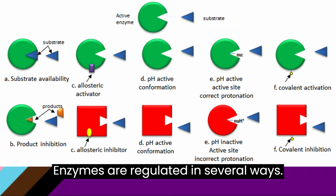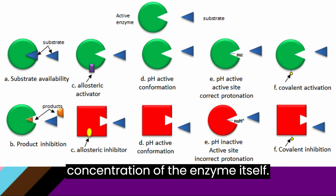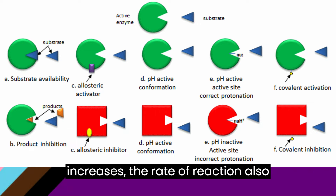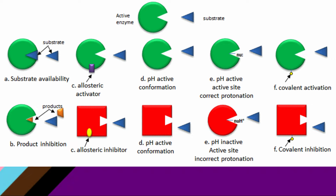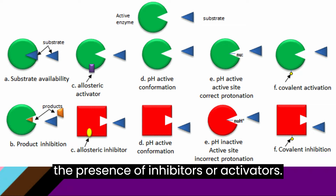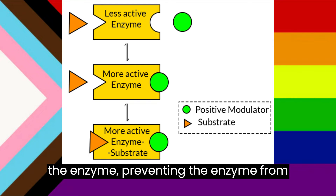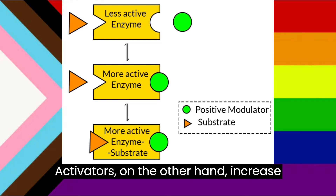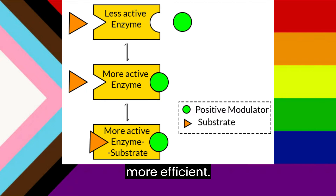Enzymes are regulated in several ways. One method of regulation is through the concentration of the enzyme itself — as the concentration of an enzyme increases, the rate of reaction also increases, up to a point of saturation. Another method of regulation is through the presence of inhibitors or activators. Inhibitors bind to the active site of the enzyme, preventing the enzyme from catalyzing a reaction. Activators, on the other hand, increase the rate of reaction by binding to the enzyme and changing its shape to make it more efficient.